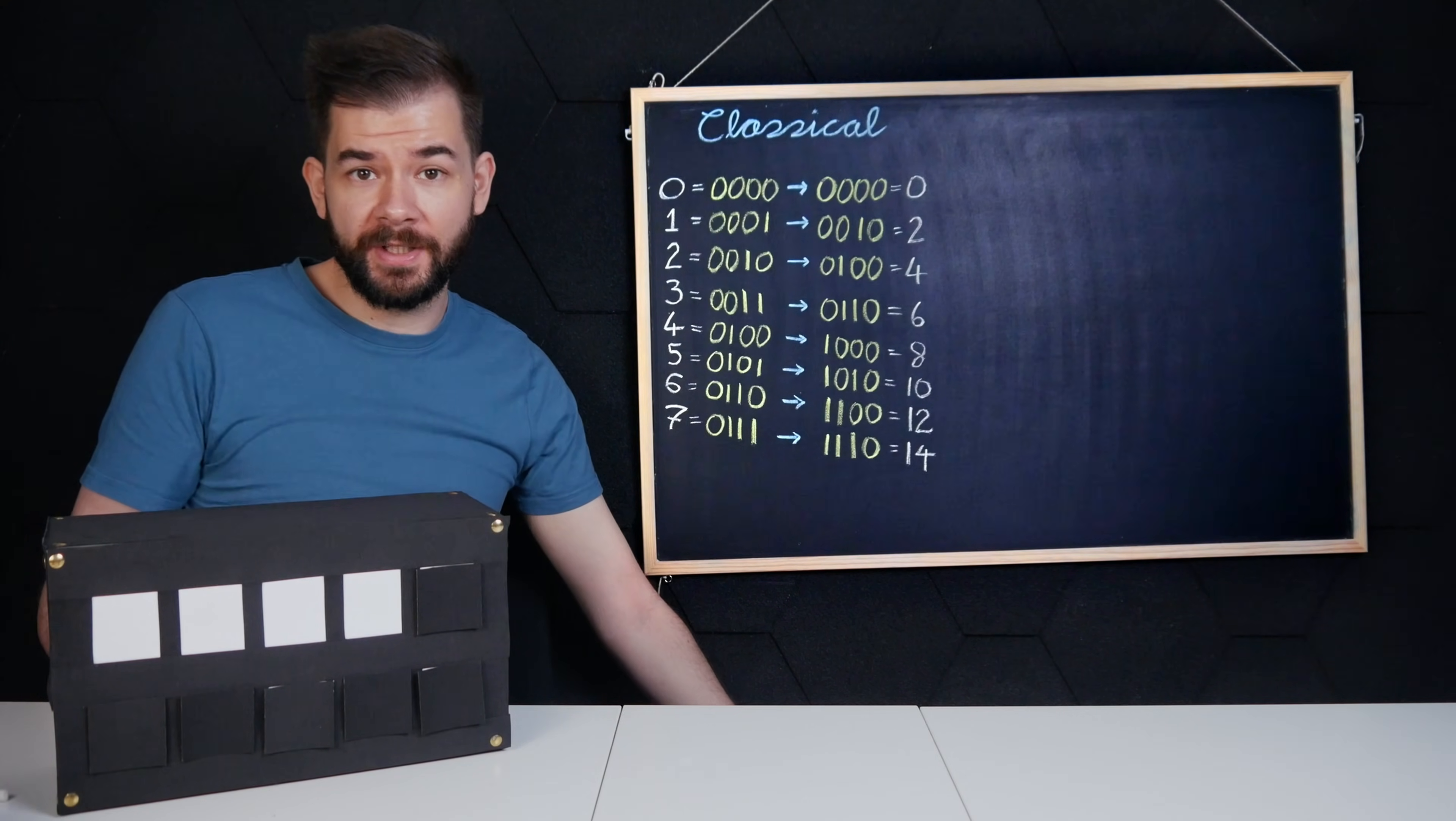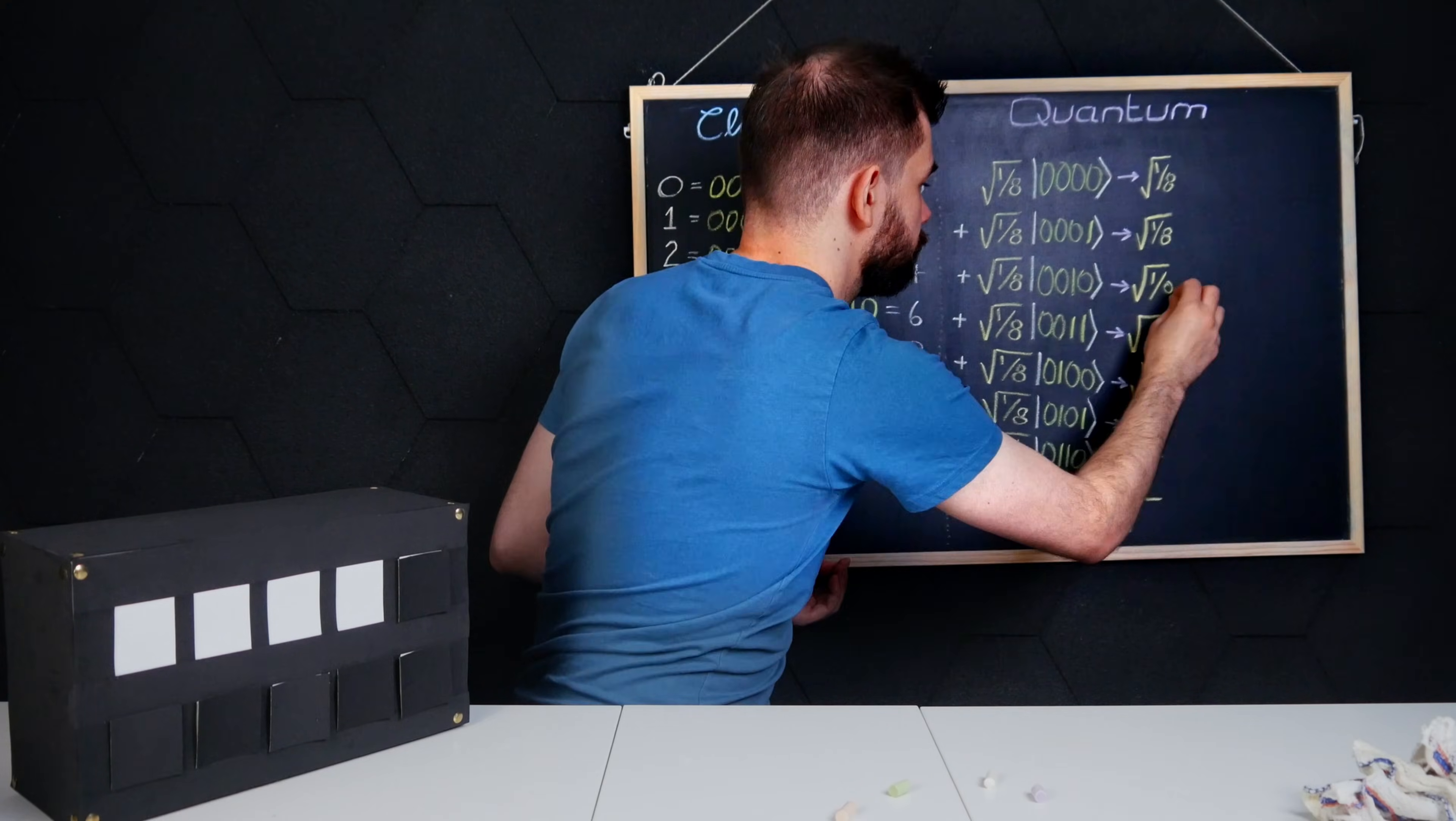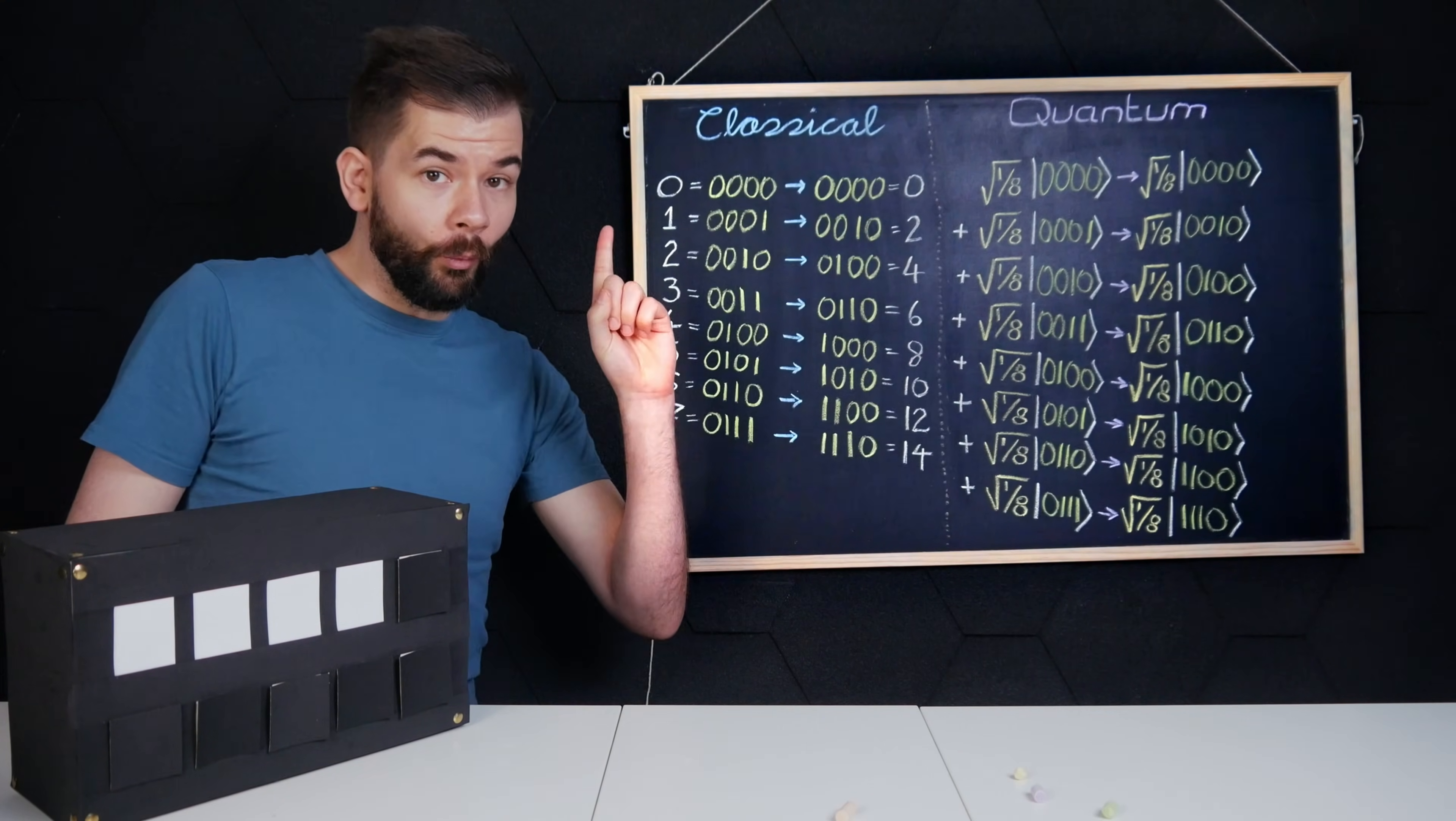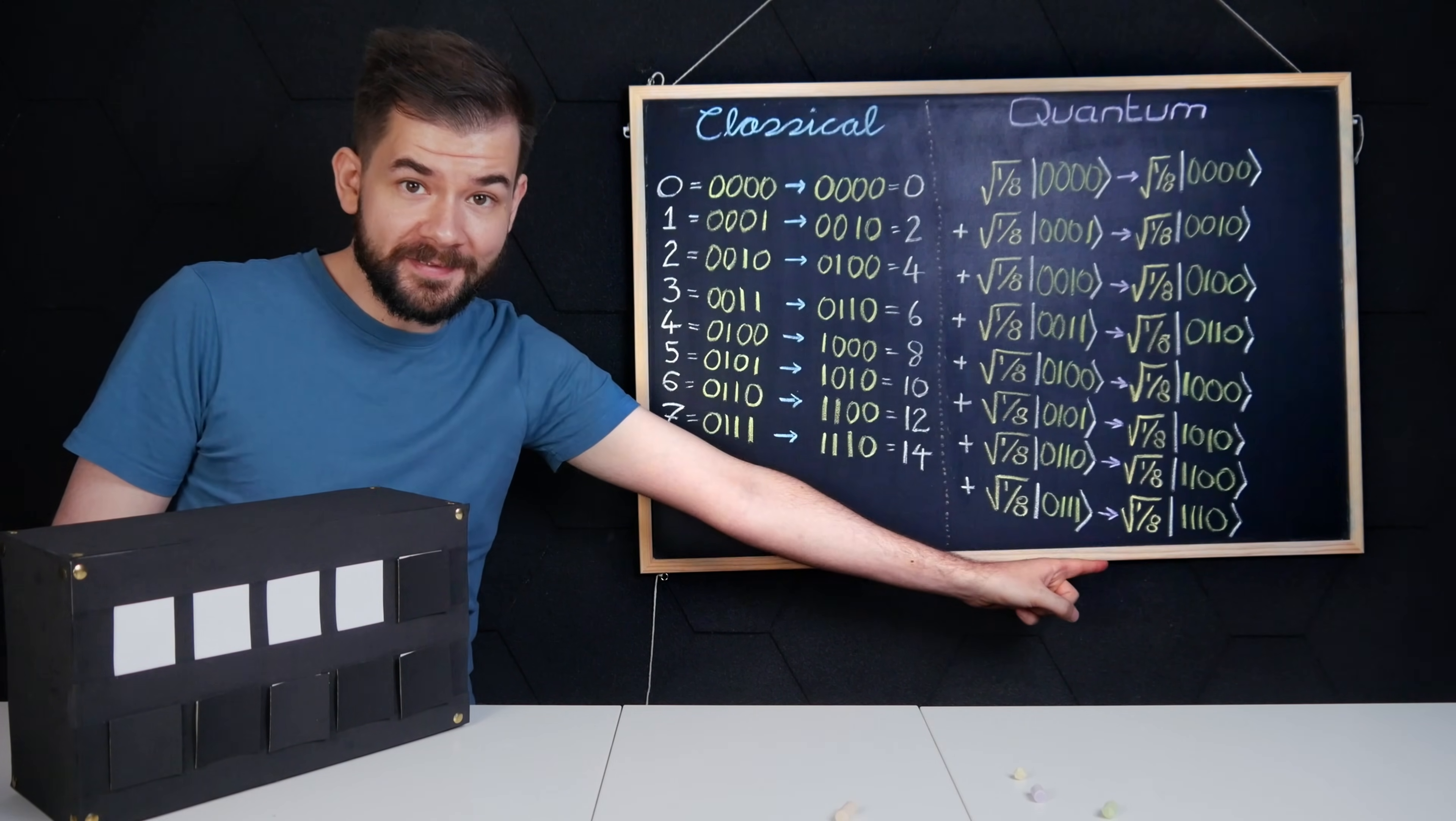But with a quantum computer, I can initialize my qubits so that there is a one eighth chance of each of these integers being observed. So I've done one computation and I've calculated all eight answers.